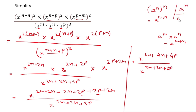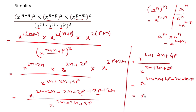Since a to the power m divided by a to the power n equals a to the power (m−n), and the base is the same, we subtract the denominator power from the numerator: x to the power (4m+4n+4p − 3m−3n−3p). Simplifying, 4m−3m = m, 4n−3n = n, 4p−3p = p. So the answer is x to the power (m+n+p). Don't forget to subscribe the channel, thank you for watching.